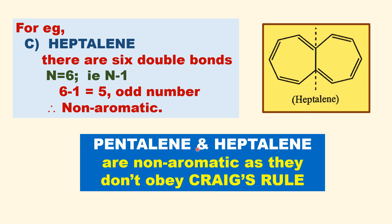Pentalene and ketalene are non-aromatic as they do not obey Greig's Rule. Whereas azulene obeys Greig's Rule, so it is aromatic.